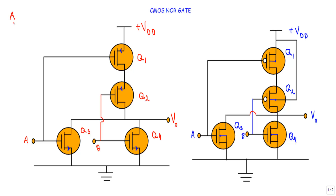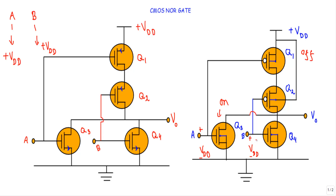Now consider the last case when A is at logic 1 and B is also at logic 1. I connect plus VDD to both input A and input B. Positive voltage is applied at the gate of Q1 — P-type — so Q1 is OFF. Positive voltage at the gate of Q3 — N-type — so Q3 is ON. Positive voltage at the gate of Q2 — P-type — so Q2 is OFF. Positive voltage at the gate of Q4 — N-type — so Q4 is ON.